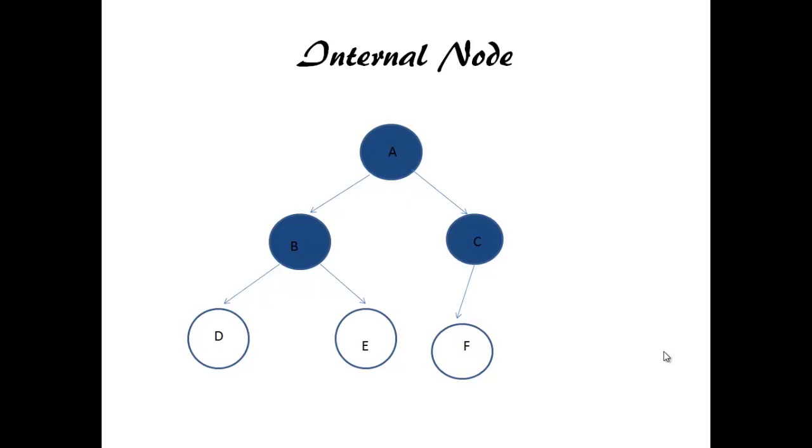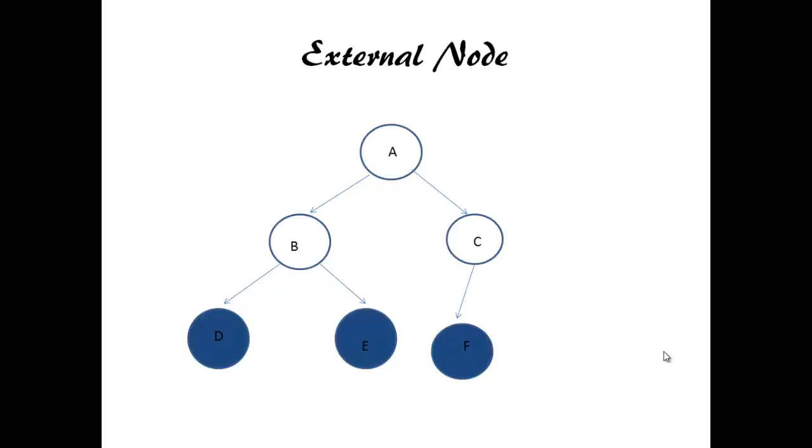Internal node. Internal node is a node with at least one child. Here, A, B, C are internal nodes. External node is a node with no child. D, E, F are external nodes here.